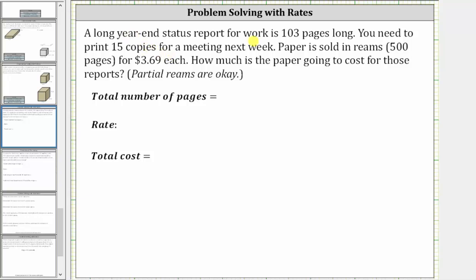A long year-end status report for work is 103 pages long. You need to print 15 copies for a meeting next week. Paper is sold in reams, which is 500 pages, for $3.69. How much is the paper going to cost for these reports? Partial reams are okay.